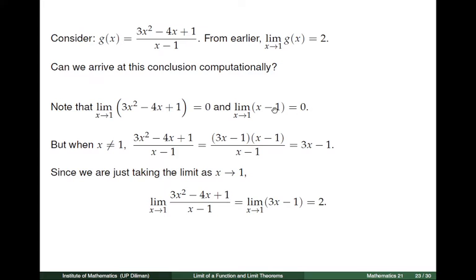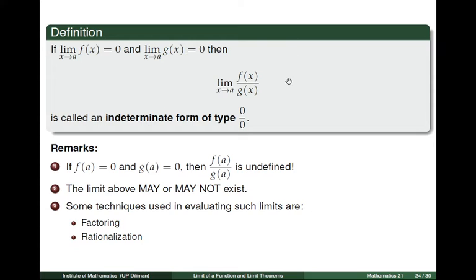Now let us generalize this solution to rational expressions where the limit of the numerator is equal to 0 and the limit of the denominator is also equal to 0. We have the following definition: suppose the limit of f of x as x tends to a is equal to 0, and likewise the limit of g as x tends to a is also 0. Then the limit of the quotient f of x divided by g of x as x tends to a is called an indeterminate form of type 0 over 0.